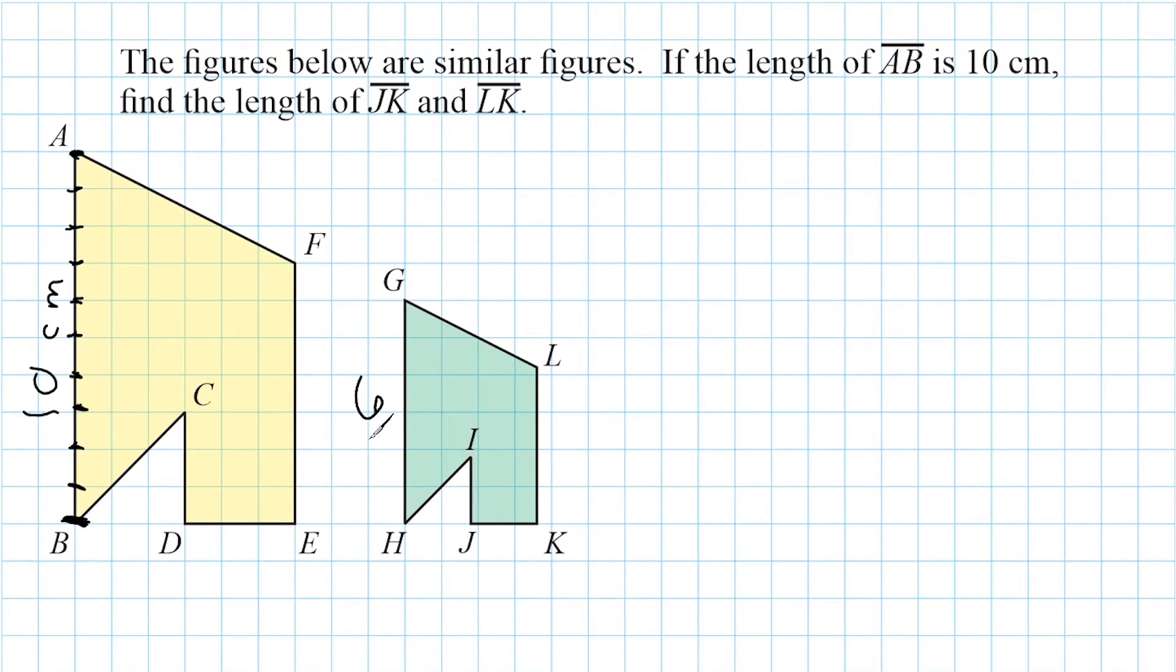Now, what we can do is use these corresponding sides to determine the scale factor of these objects. What I'm going to do first is I'm going to take this 6 and I am going to divide it by 10. Now, because this 6 is the length of this side of the green object, I'm just going to put a G up here just to represent that this length of 6 is part of the green object. And then for this 10 here, I'm going to put a Y for yellow. And what we're going to do is we're going to set that equal to another set of corresponding sides. And because I put the green on the top over here, I'm going to do the same thing over here and put yellow on the bottom.